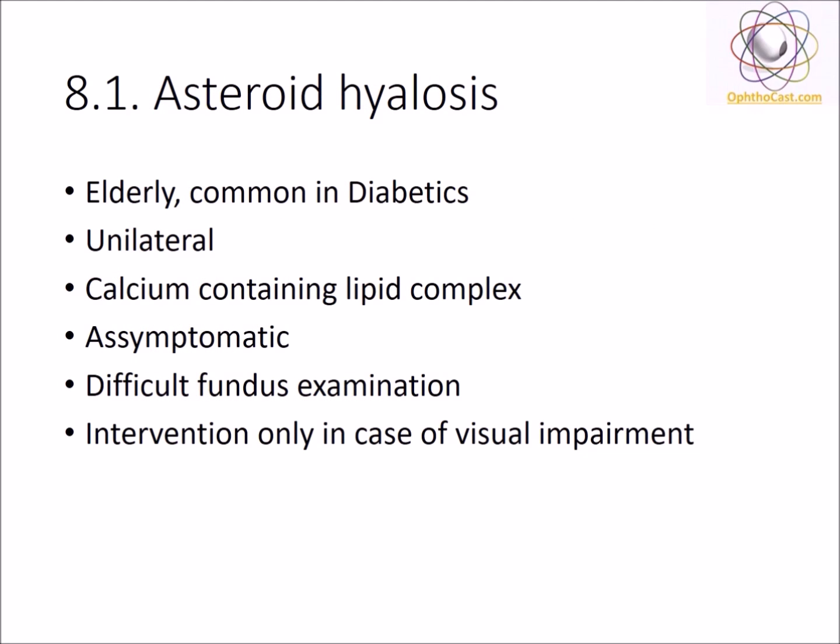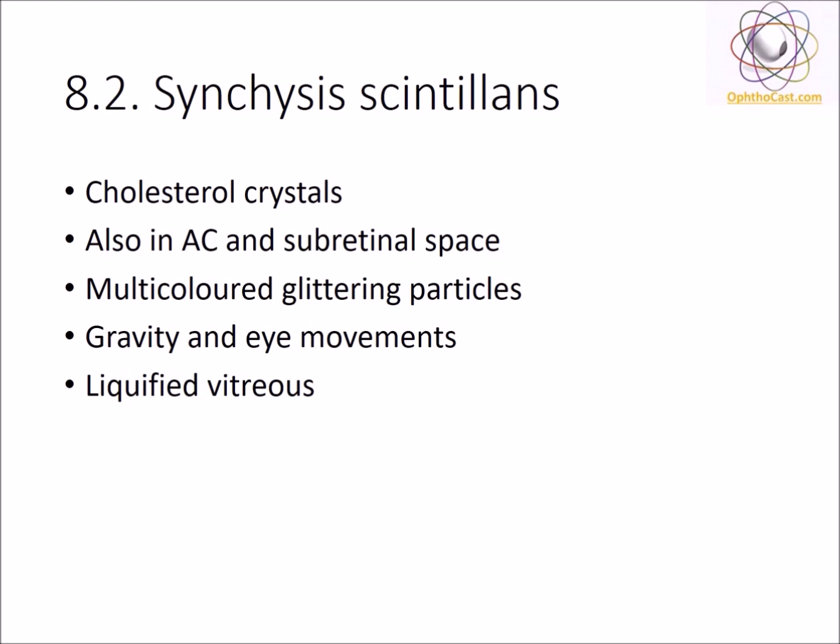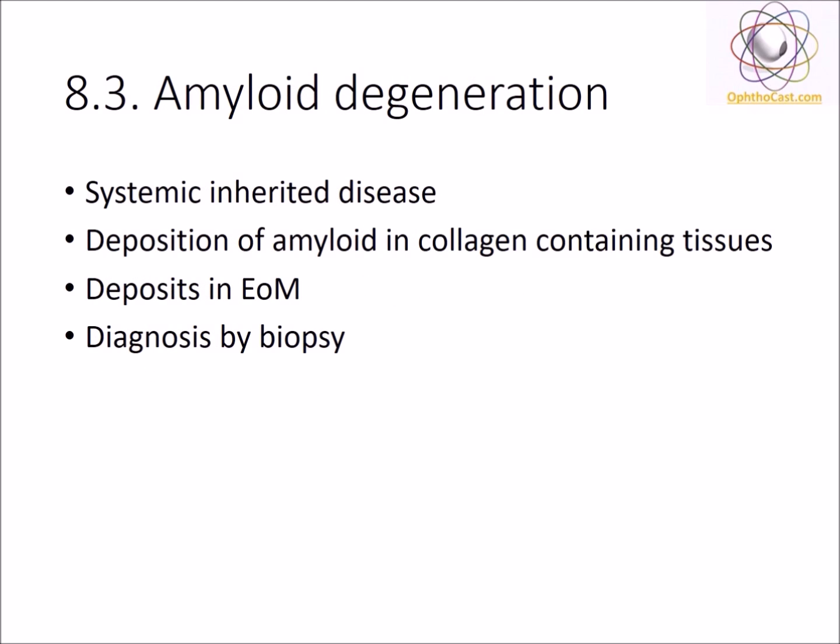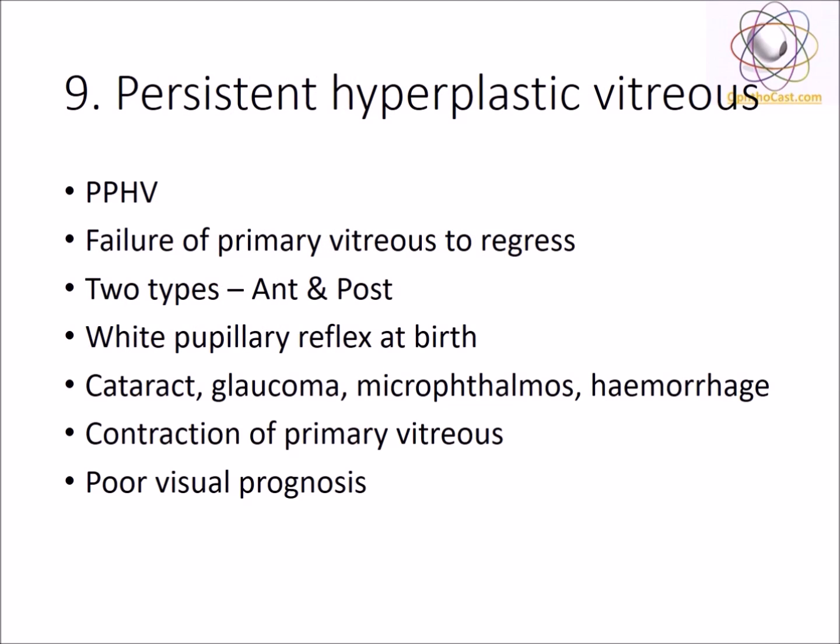Asteroid hyalosis is commonly seen in elderly patients and diabetics, and is commonly unilateral and asymptomatic. There are calcium-containing crystals floating in the vitreous. Intervention is required only in cases of visual impairment. Synchisis scintillans are cholesterol crystals in the vitreous — they can also be seen in the anterior chamber occasionally. They appear as multicolored glittering particles which move with gravity. Amyloid degeneration is a systemic inherited disease which leads to deposition of amyloid in collagen-containing tissues.